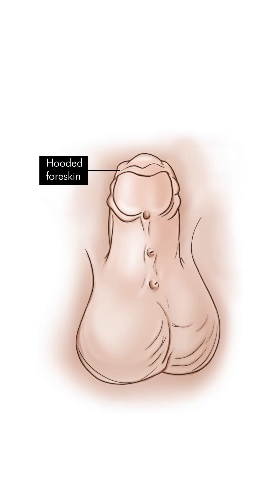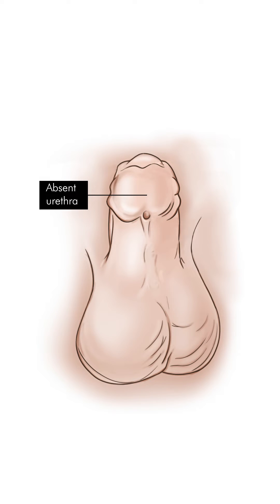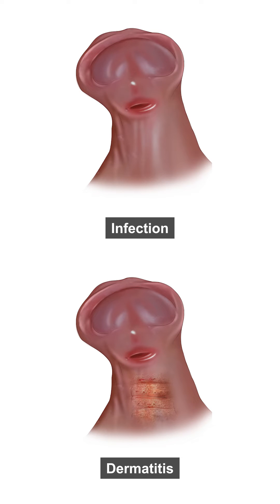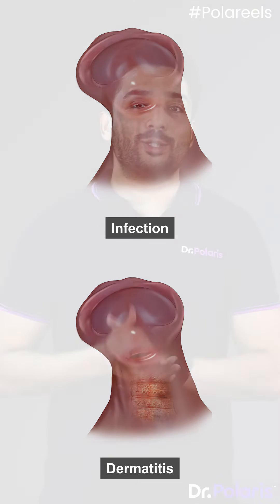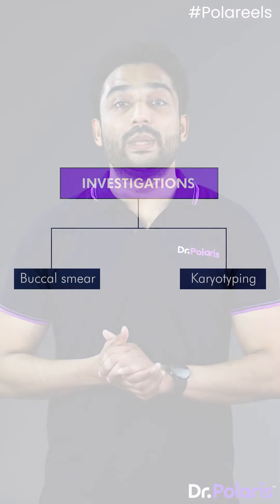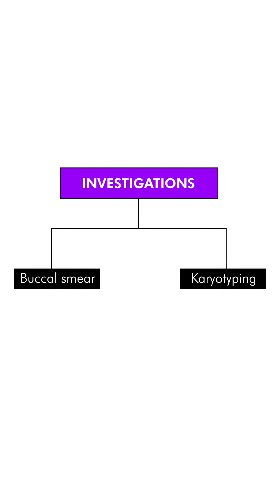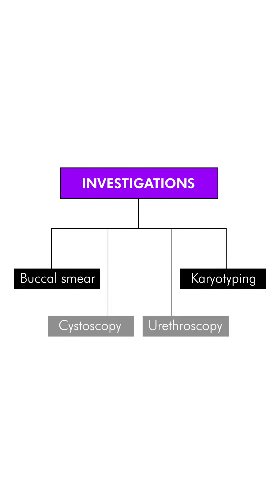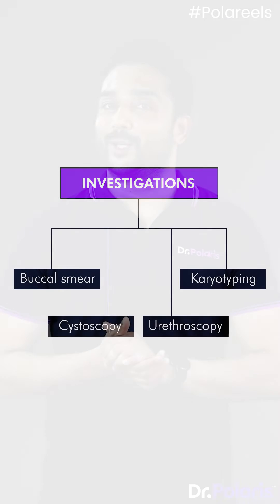Clinical features include chordee, that is bowing or bending of the penis; hooded foreskin, that is absence of the ventral part of the foreskin; absence of the urethra distal to the urethral orifice; and infection and dermatitis secondary to urine soakage.